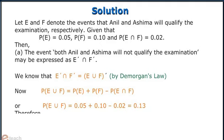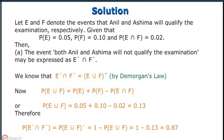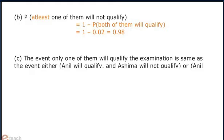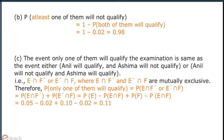Part C: the event 'only one of them will qualify' is the same as the event either Anil will qualify and Ashima will not, or Anil will not qualify and Ashima will qualify. That is E intersection F', or E' intersection F, where E intersection F' and E' intersection F are mutually exclusive. Therefore, probability that only one of them will qualify is probability of E intersection F' or E' intersection F, which comes out to be equal to 0.11.